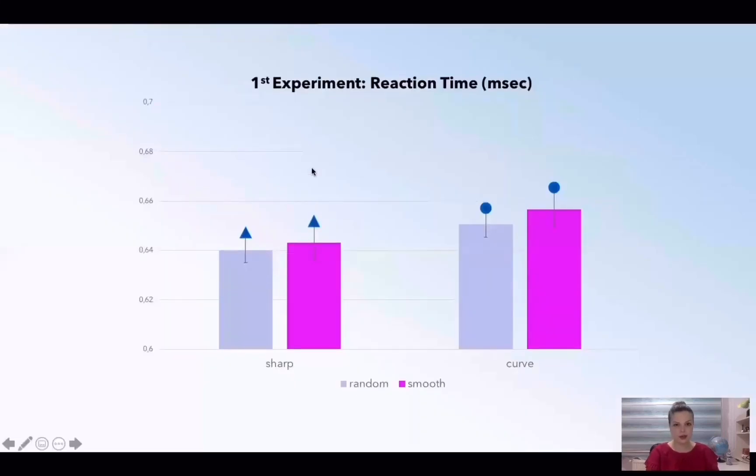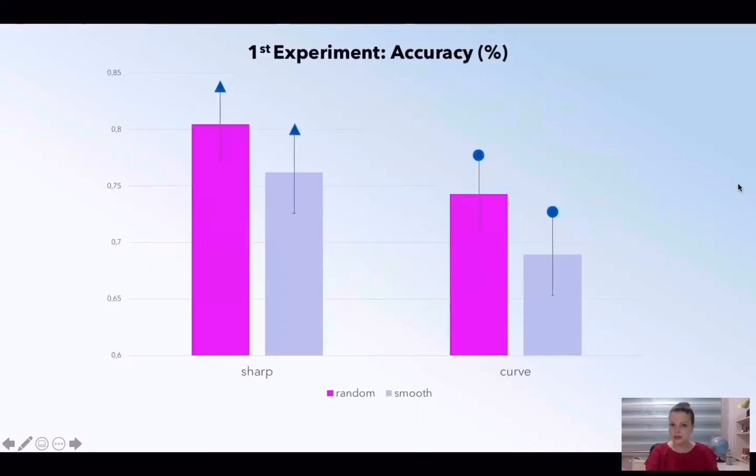Sharp-edged trials were responded to faster than curved-edged ones. Neither of the main effect of configuration or interaction was reflected on reaction time. Advantage of sharp-edged contour was observed in accuracy analysis, as we expected. And random configurable trials, the pink ones, were responded more accurately than smooth ones.